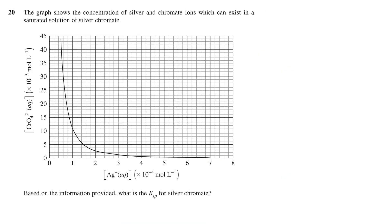The last question in the multiple choice section is 20. Question 20 states: The graph shows the concentration of silver and chromate ions, which can exist in a saturated solution of silver chromate. We are then presented with a gridded graph, with the concentration of the silver ions in moles per liter on the x-axis and the concentration of the chromate ions on the y-axis. The plot is drawn on top and starts from the top left part of the graph, ending near the bottom right, similar to an exponential decrease, or one part of a hyperbolic plot.